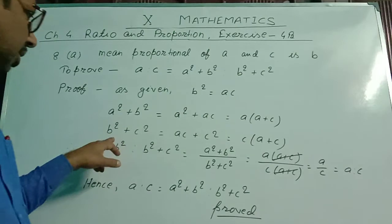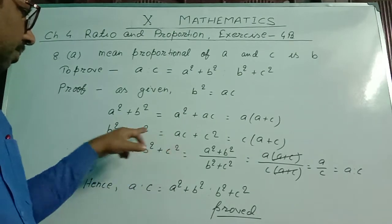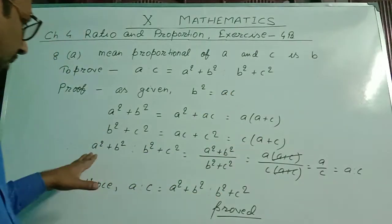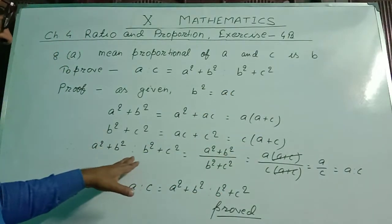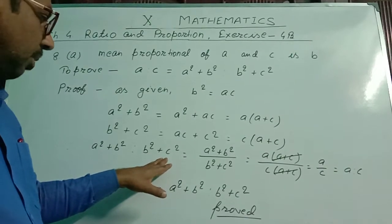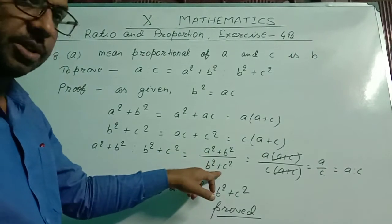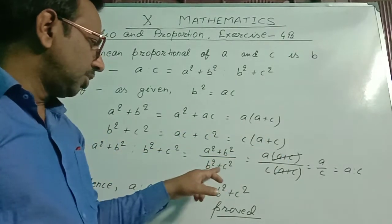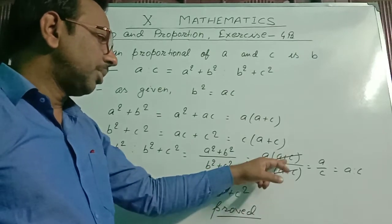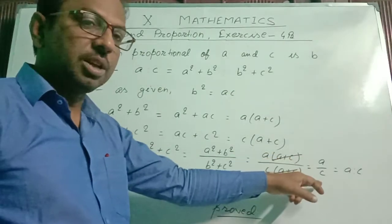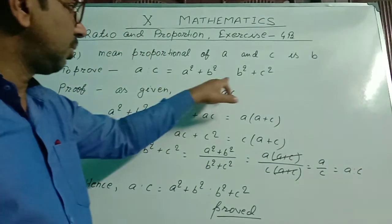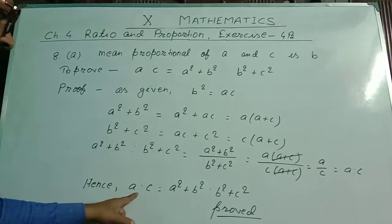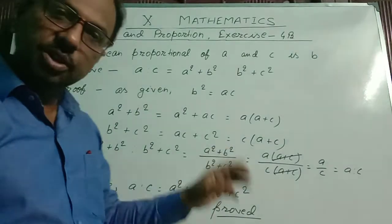Again, b² + c² = ac + c² — I kept the value of b² as ac. From these two terms, I have taken c as common, so c(a + c) is left inside the bracket. Now, (a² + b²)/(b² + c²) = a(a + c) / c(a + c). The (a + c) terms cancel, leaving a/c. We can write a : c. So from this calculation, we arrive at LHS = RHS. Hence, a : c = (a² + b²) : (b² + c²) is proved.